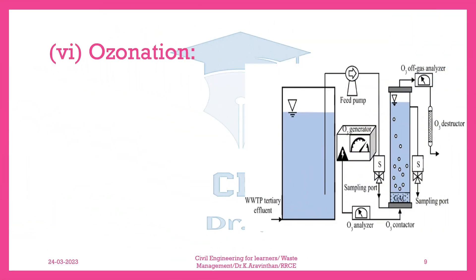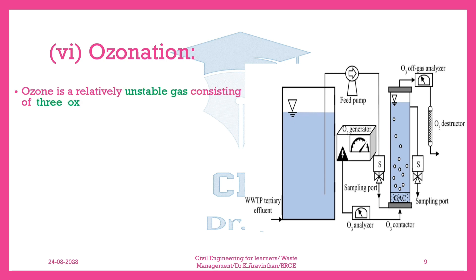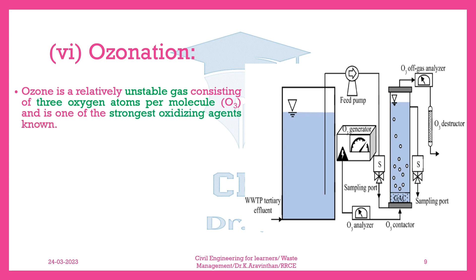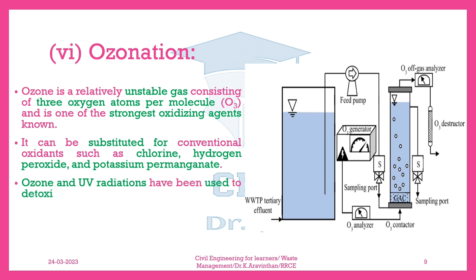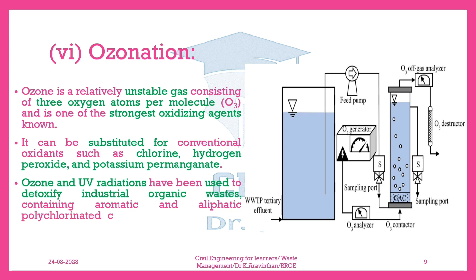Ozonation. Ozone is a relatively unstable gas consisting of 3 oxygen atoms per molecule (O3) and is one of the strongest oxidizing agents known. It can be substituted for conventional oxidants such as chlorine, hydrogen peroxide, and potassium permanganate. Ozone and UV radiation have been used to detoxify industrial organic wastes containing aromatic and aliphatic polychlorinated compounds, ketones, and alcohols.